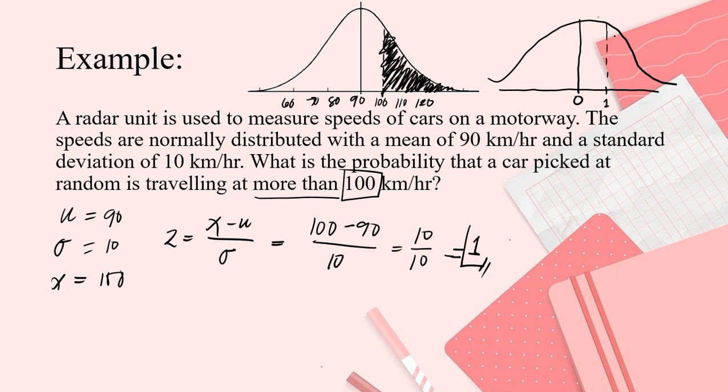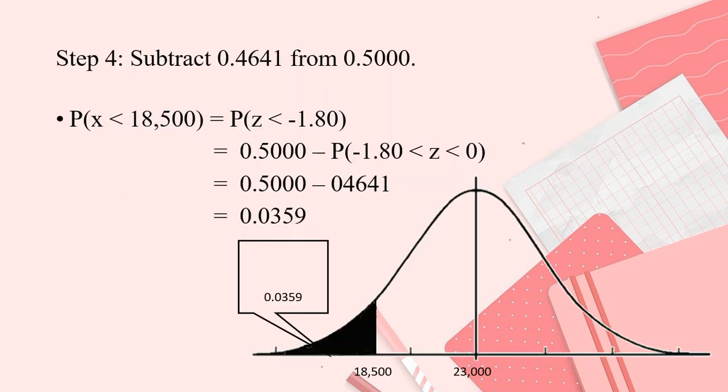And then more than 1 is what we're looking for. So, this is it. Same. We just transformed into z scores the given. Now, get the equivalent in our table. So, let's go back to our table.